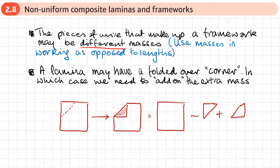What we might have is a lamina where a corner has been folded over. In that case, we need to add on the extra mass.